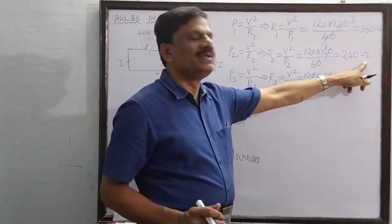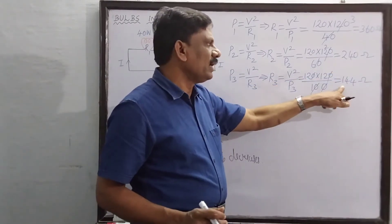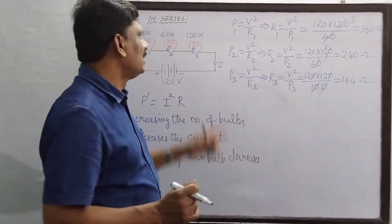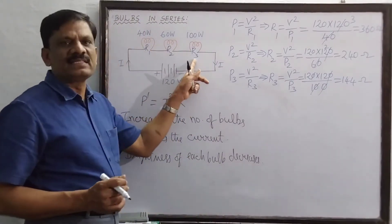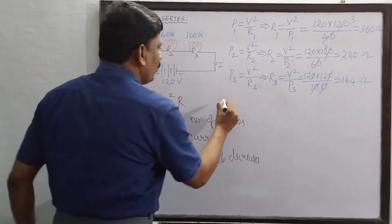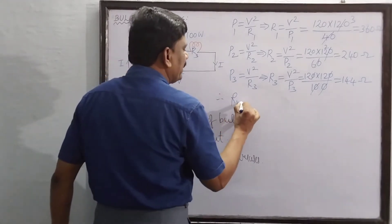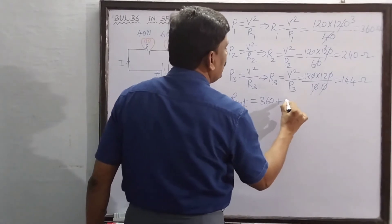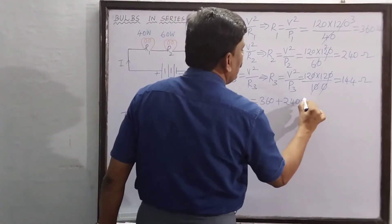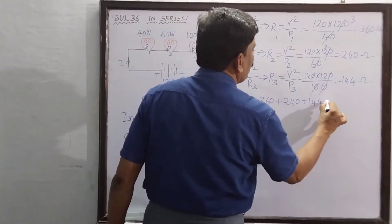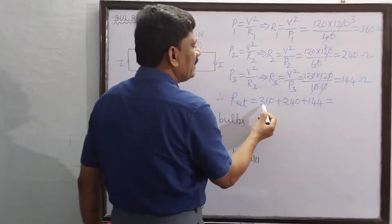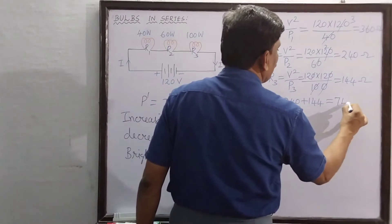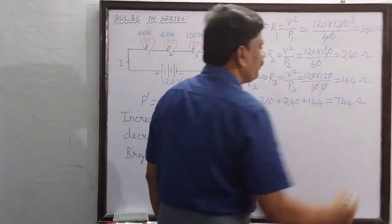So the resistance of the first bulb is 360 ohms, the second is 240 ohms, and the third is 144 ohms. The net resistance of the three resistors in series is R_net = R1 + R2 + R3 = 360 + 240 + 144 = 744 ohms.